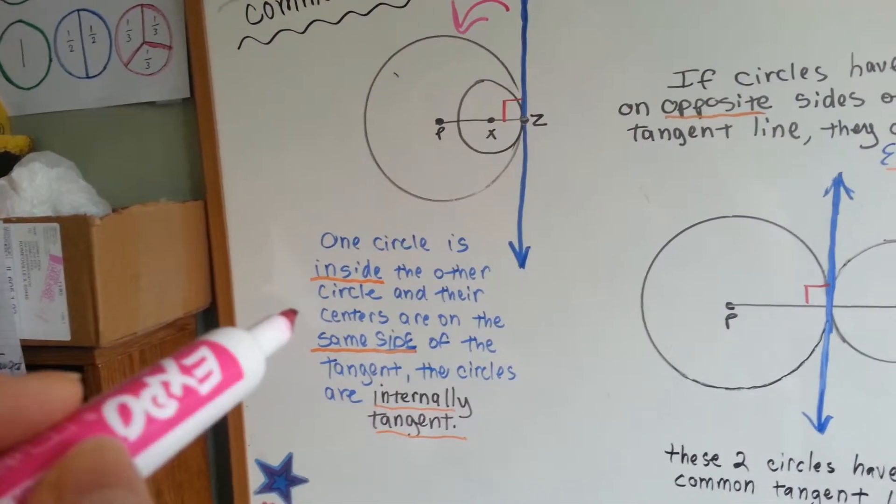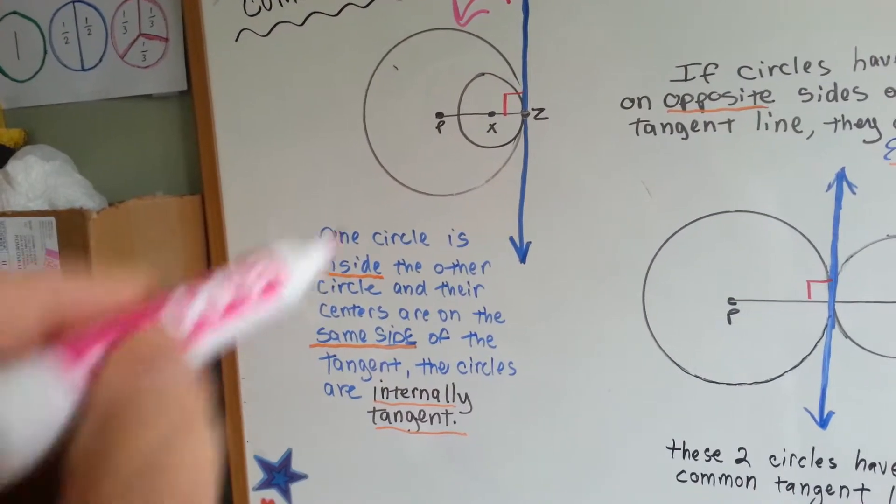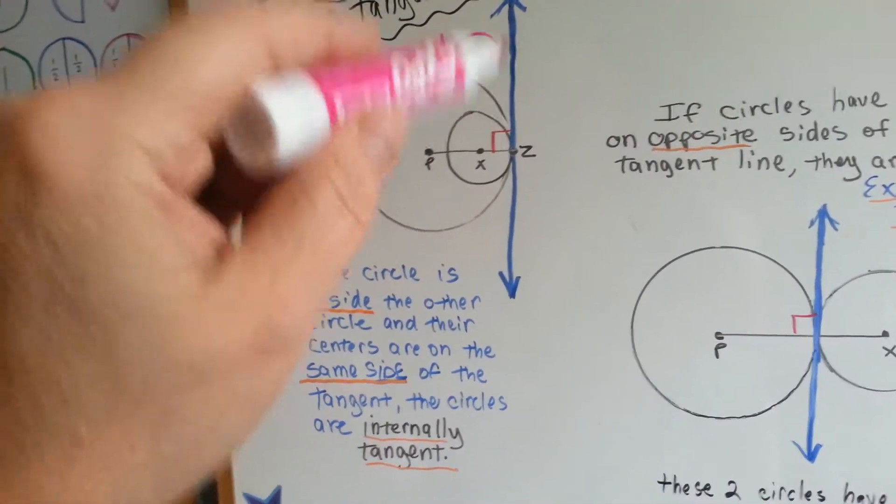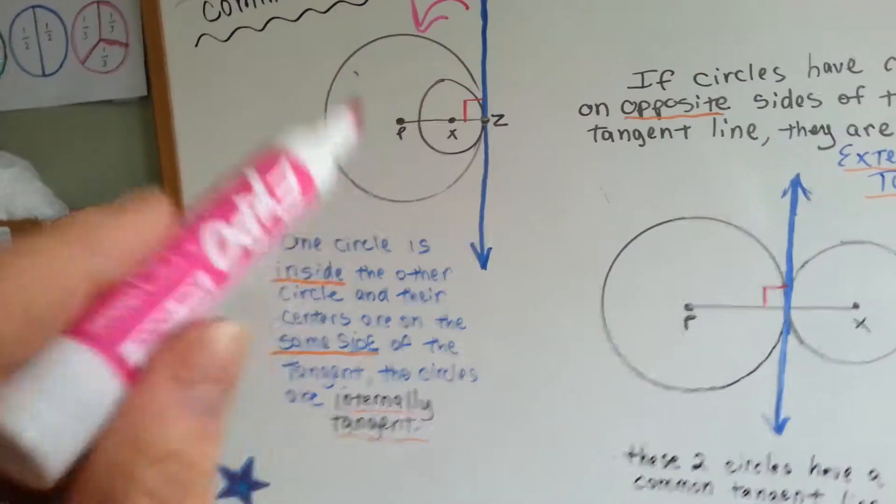One circle is inside the other circle, and their centers are on the same side of the tangent. They're both on the left of this tangent line, so they're internally tangent.